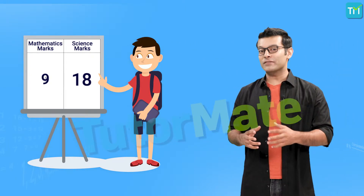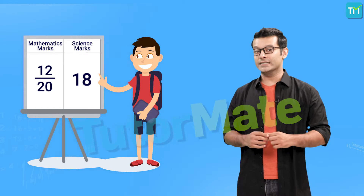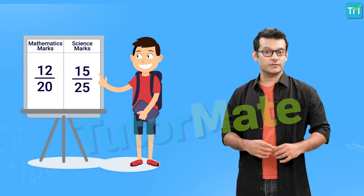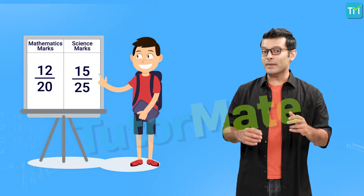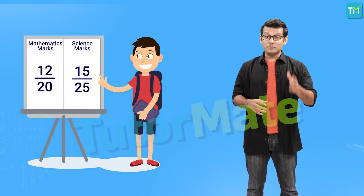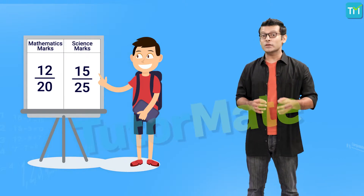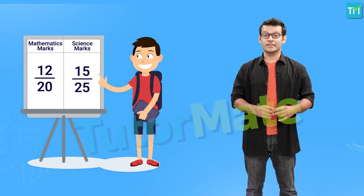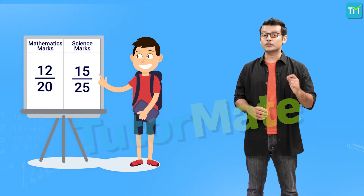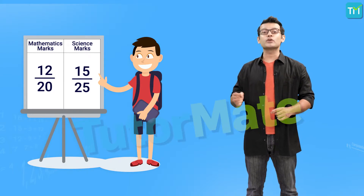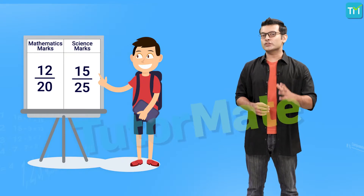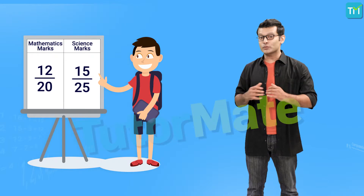Next, let's say the marks obtained in math are 12 out of a total of 20, and the ones obtained in science are 15 out of a total of 25. Can we compare math and science marks just by looking at the marks obtained? No, because in this case the total marks are not equal for both subjects, meaning the denominators are different, so we cannot compare the two scores simply by looking at the marks obtained.